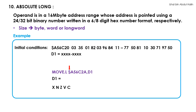The dot L after the MOVE command tells the micro-P that a long word is to be moved. Thus, the long word data starting at this address, which is 81103071, is moved to register D1. Since the data moved is a negative signed number that is not 0, the status register is updated as X1000.